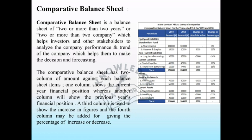The comparative balance sheet has two columns of amount against each balance sheet item. One column shows the current year's financial position whereas the other column shows the previous year's financial position. A third column is used to show the increase in figures, and a fourth column may be added for giving the percentage of increase or decrease.